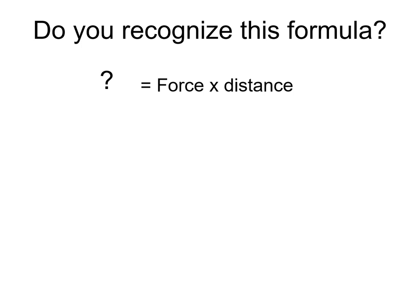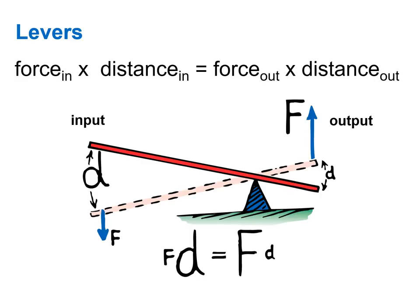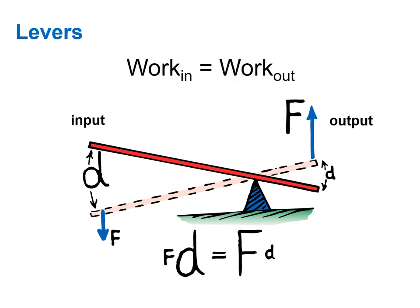Now force times distance may sound familiar to you. Have you ever seen an equation that had force times distance in it? That's the equation for work. Work in physics terms is an applied force moving an object. So essentially what you can show for this lever system is that the work input is equal to the work output. Force times distance on one side equals force times distance on the other side.